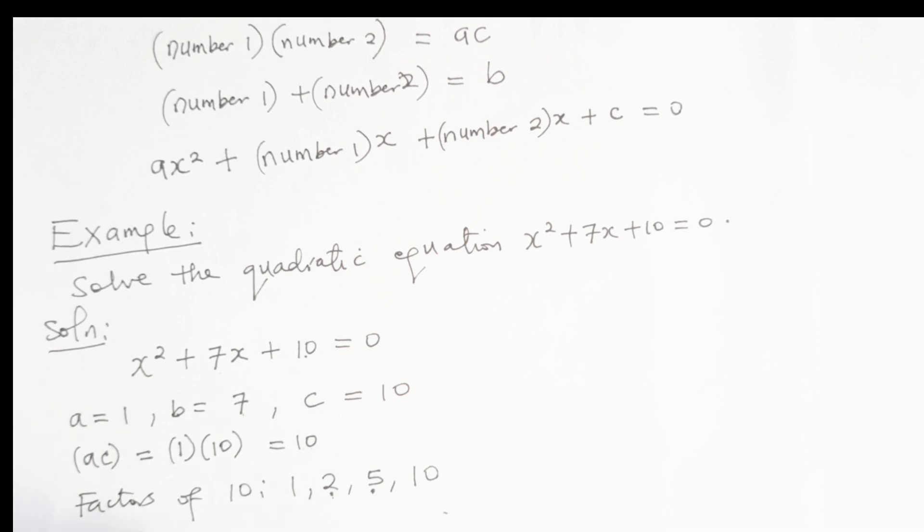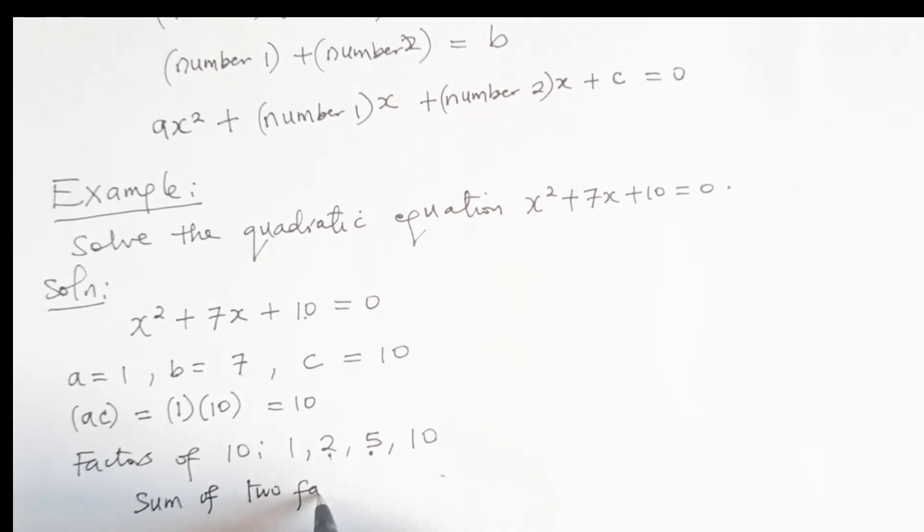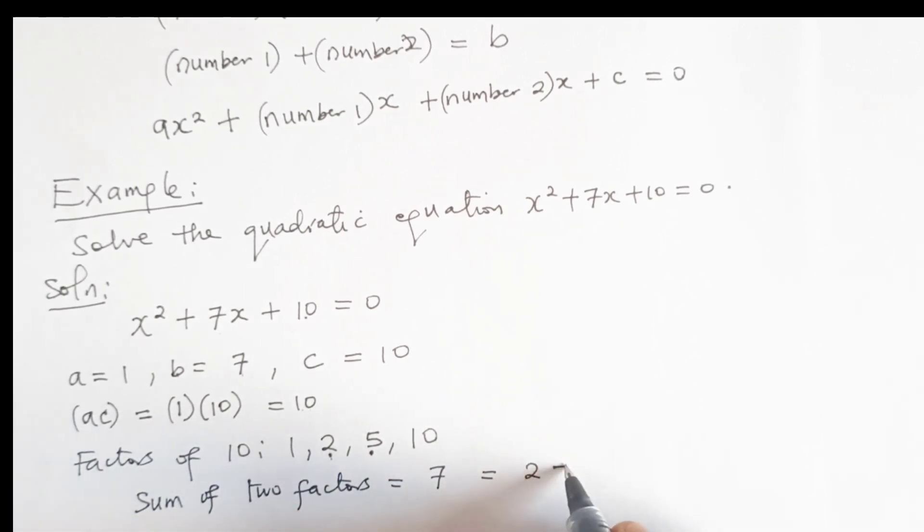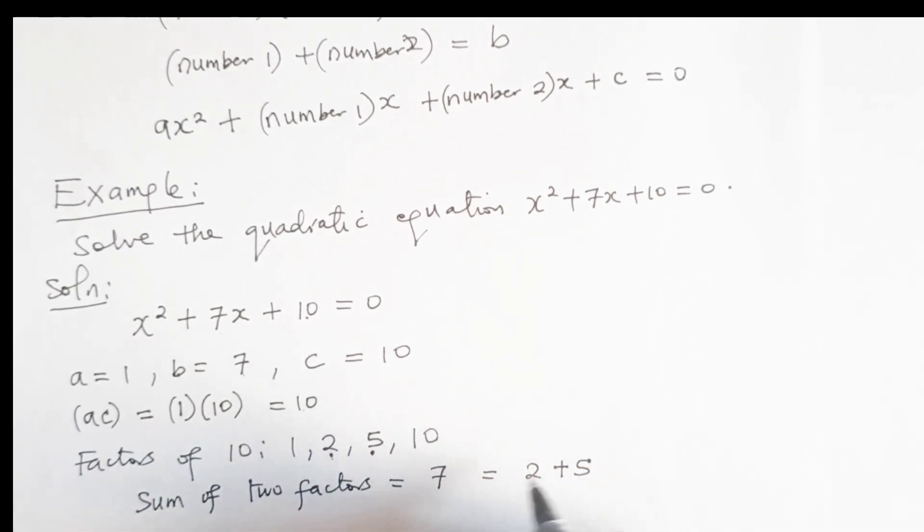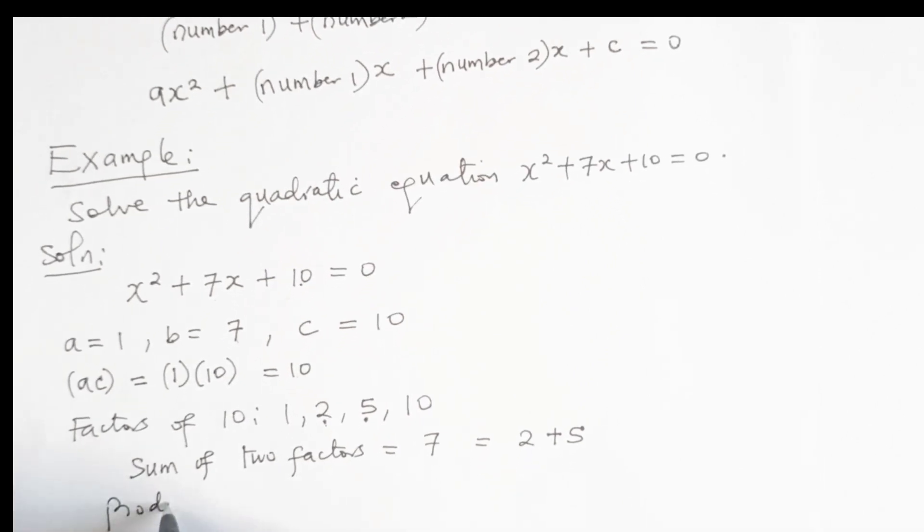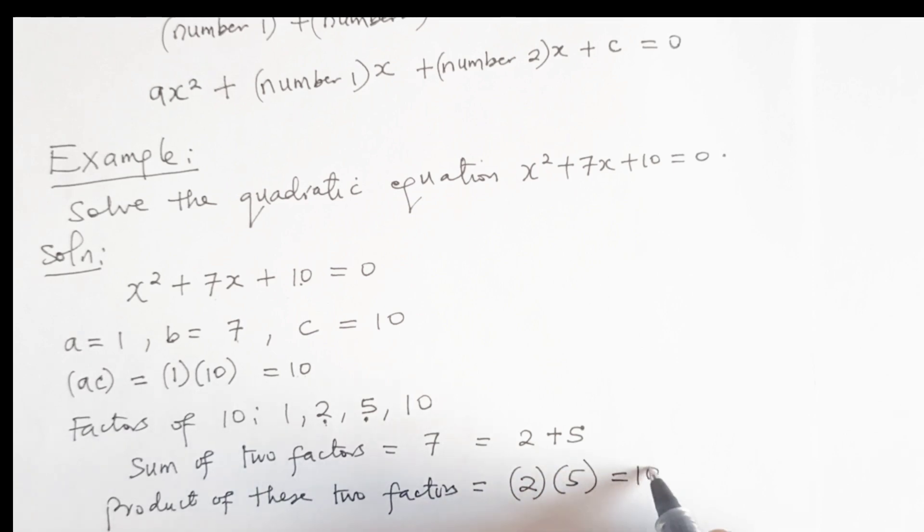The sum of the two factors will give us 7, and that is 2 plus 5. The product of these two factors will be 2 times 5 equal to 10.